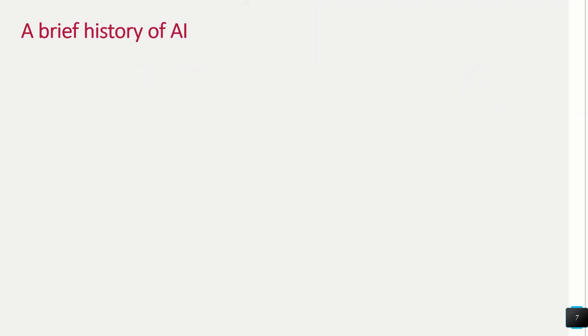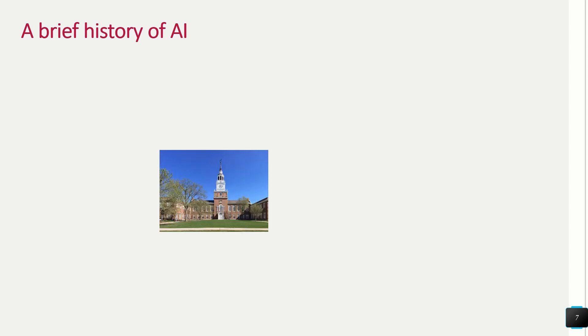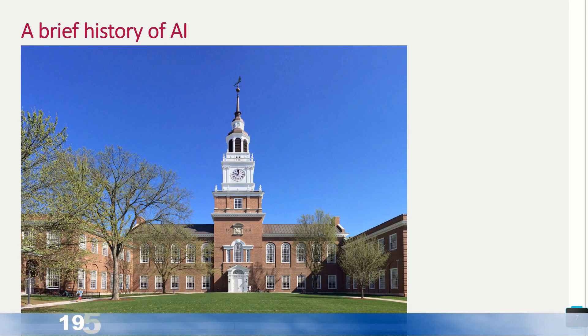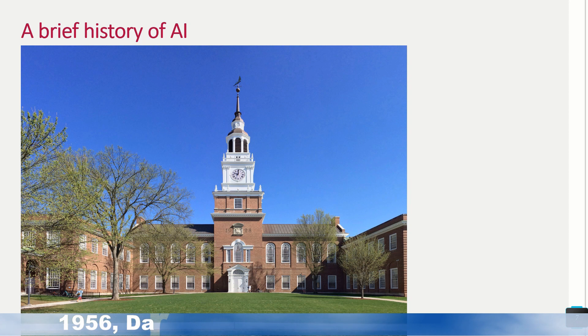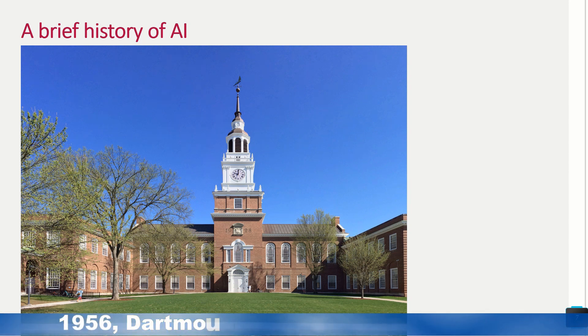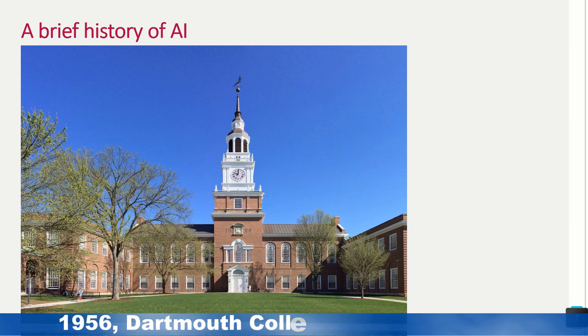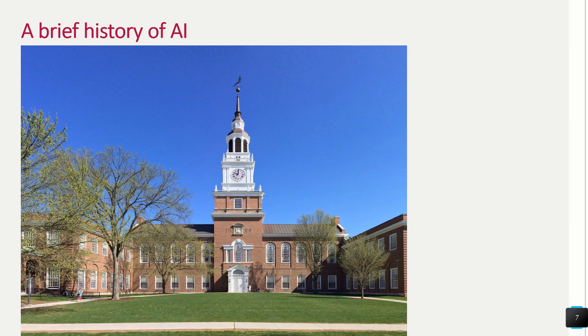Now let's see a brief history of AI. In the year 1956, a group of scientists from different backgrounds decided to organize a summer research project on intelligent machines. Four bright minds led the project.